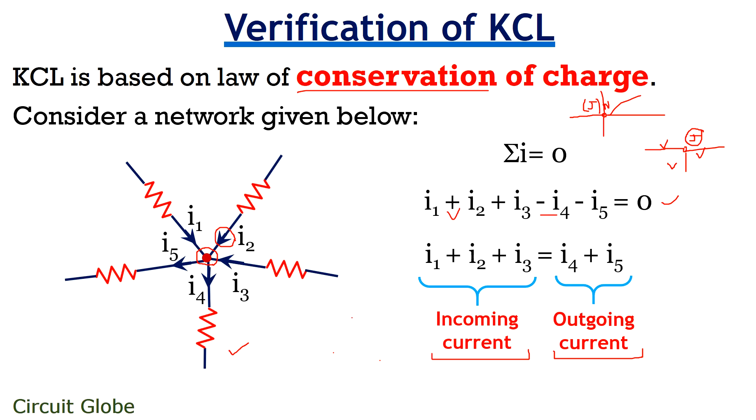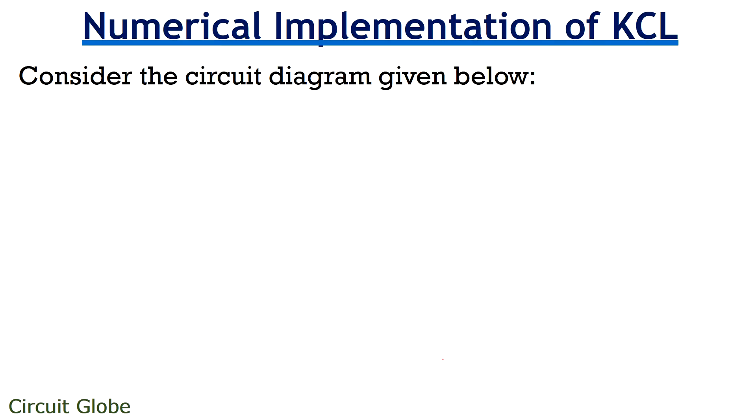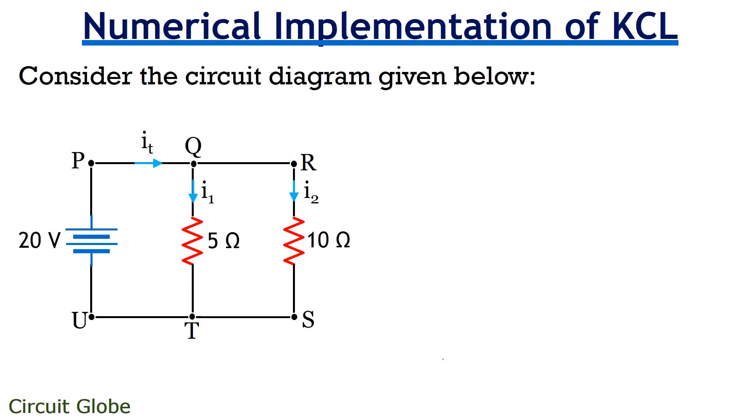So let's now move further and understand how KCL is applied in a circuit. And for that, consider the circuit shown here. As it is clear from the figure that the circuit has two junctions. One is at node Q and the other is at node T. Thus junction rule is applied at these two junctions in order to get electrical currents at two different junctions.